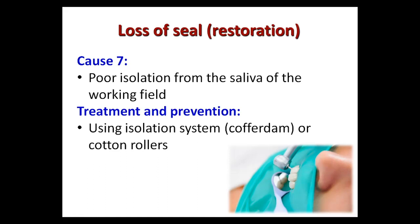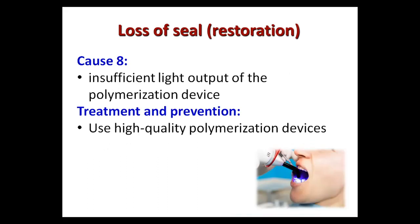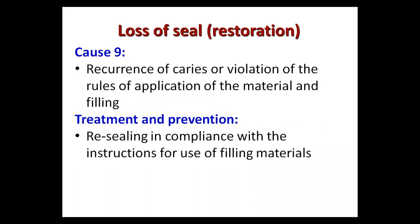The absolute isolation system is a cofferdam or rubber dam. Relative isolation using cotton rollers can also be used. Cause number eight is insufficient light output of the polymerization device. Prevention requires using a high-quality polymerization device and checking it periodically.